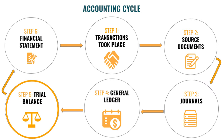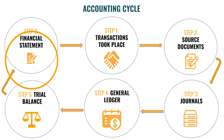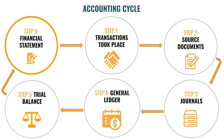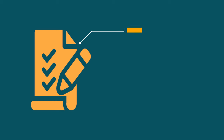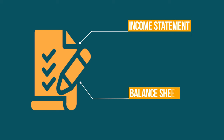Now Grade 8, we will look at the last step of the accounting cycle, and that is the drawing up of Financial Statements. There are two components within the Financial Statements: the Income Statement and the Balance Sheet.